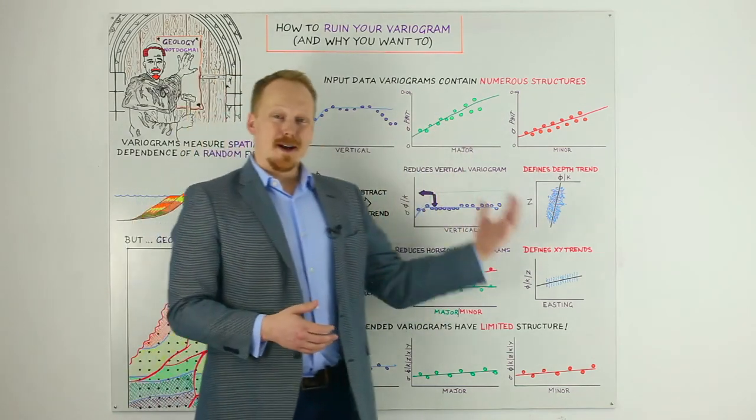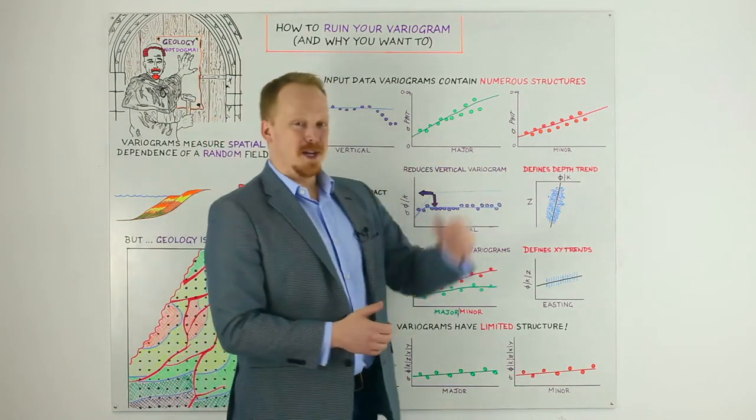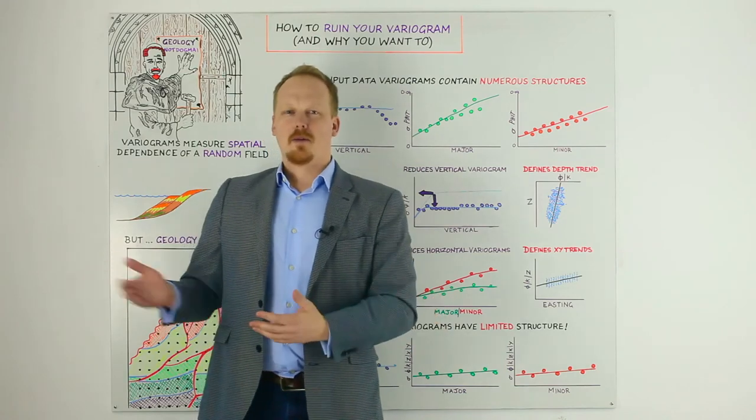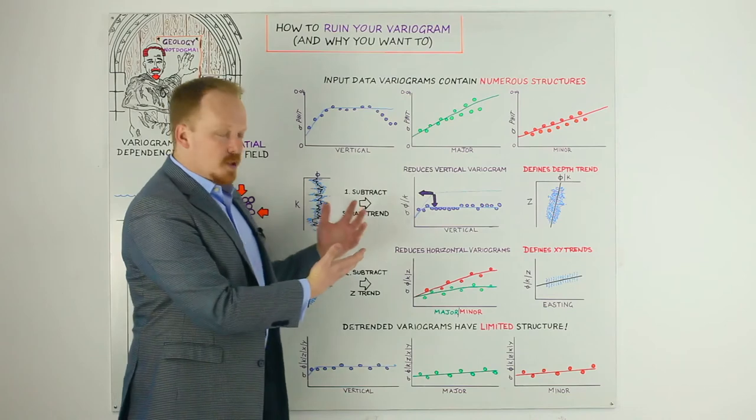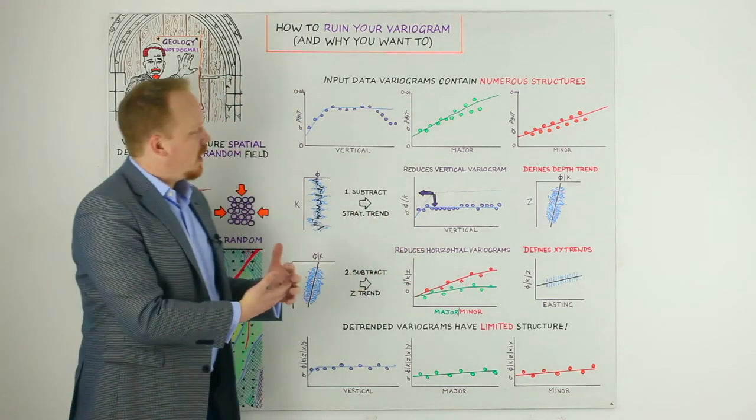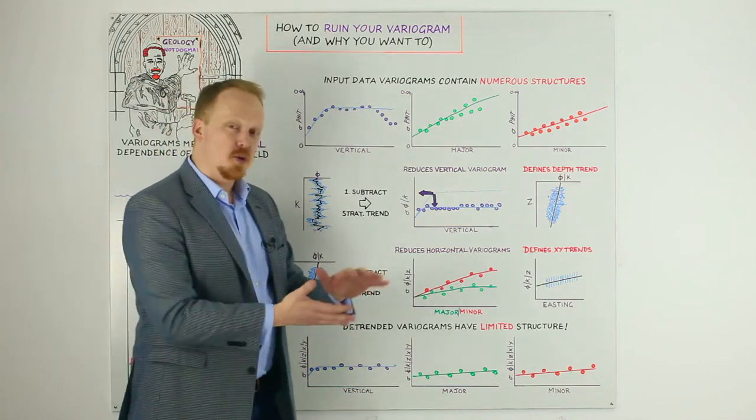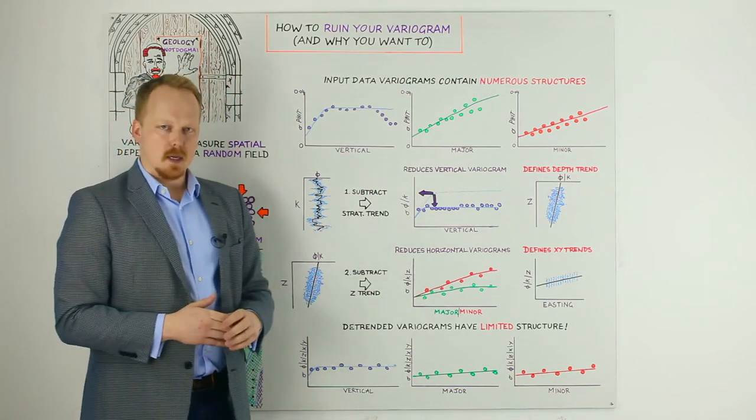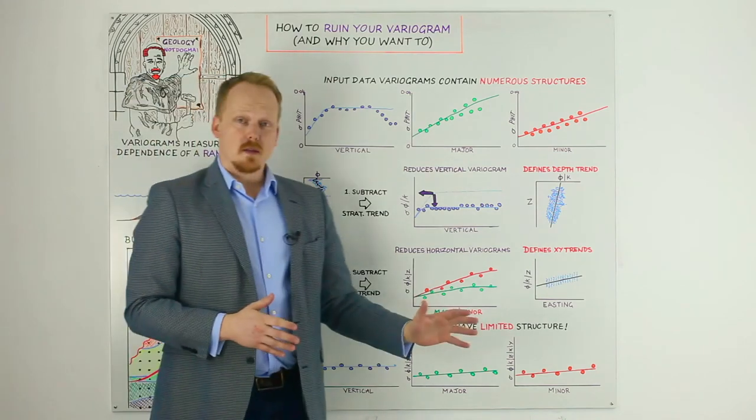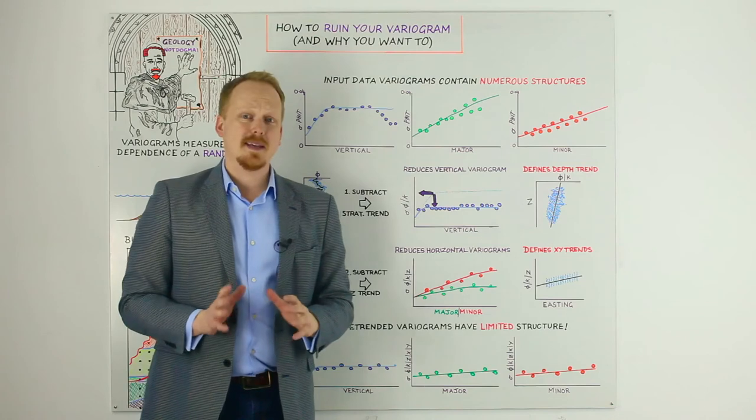But these horizontal variograms are something that we basically never get to measure in the real world. And so we spend our time in peer reviews, often defending whatever settings we have done in these major and minor directions with no basis or outcrop that we can link that to. So if you want to do something in this space, you can make your models much more predictive because you can end up driving geology into it and removing the dependence upon your random seed.